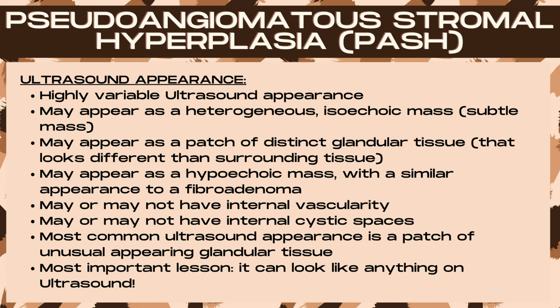It can appear as a heterogeneous isoechoic mass, which is often subtle, or as a patch of distinct glandular tissue that looks just slightly different than the surrounding tissue. It may appear as a hypoechoic mass with a similar appearance to a fibroadenoma, and may or may not have internal vascularity or internal cystic spaces. The most common ultrasound appearance is a patch of unusual-appearing glandular tissue with very subtle differences from the surrounding tissue.